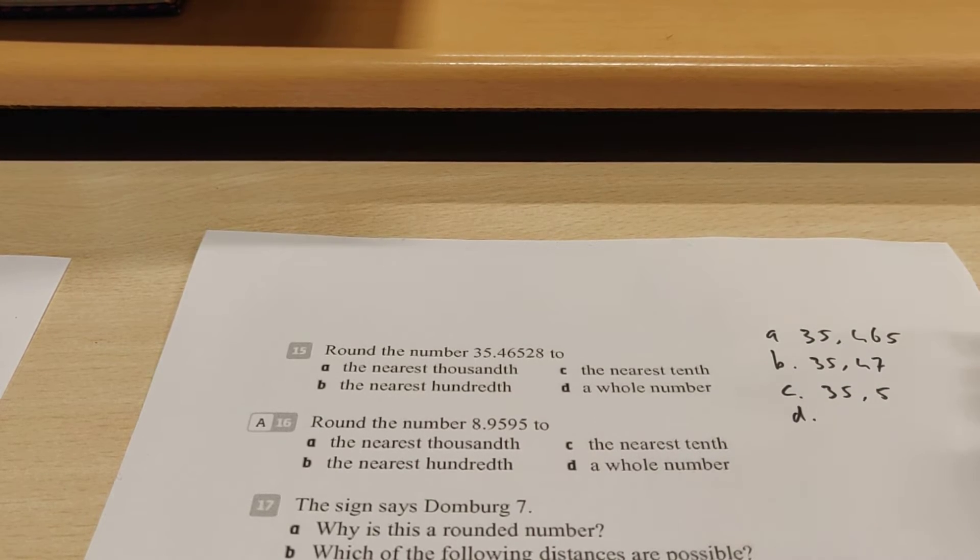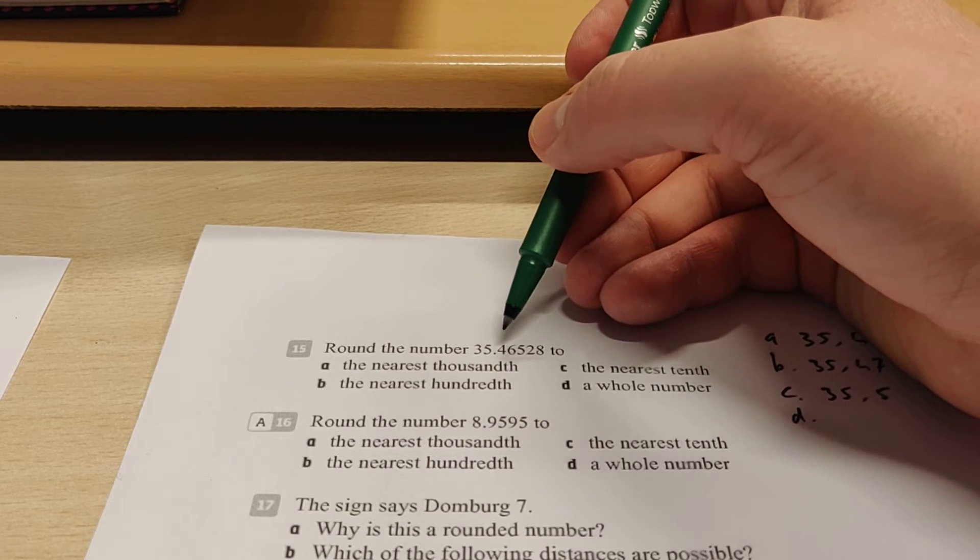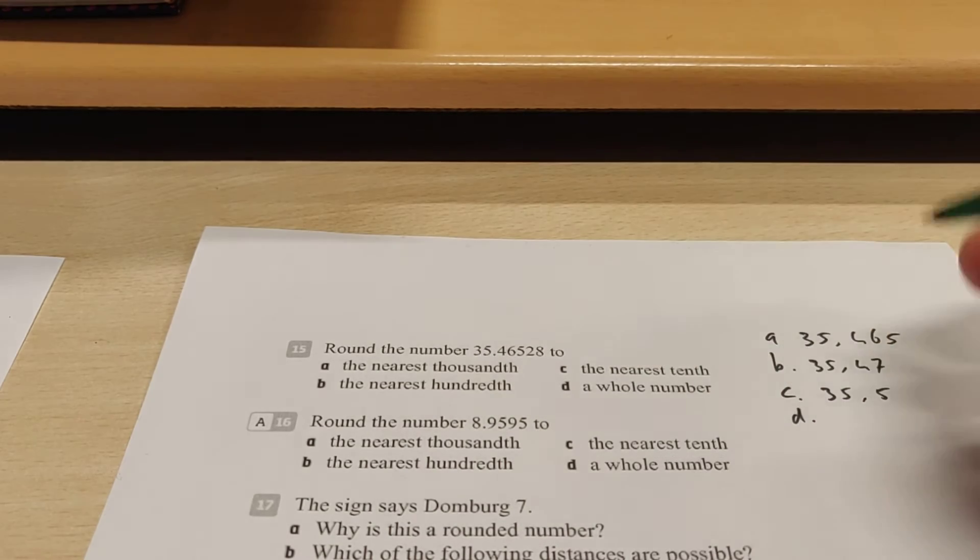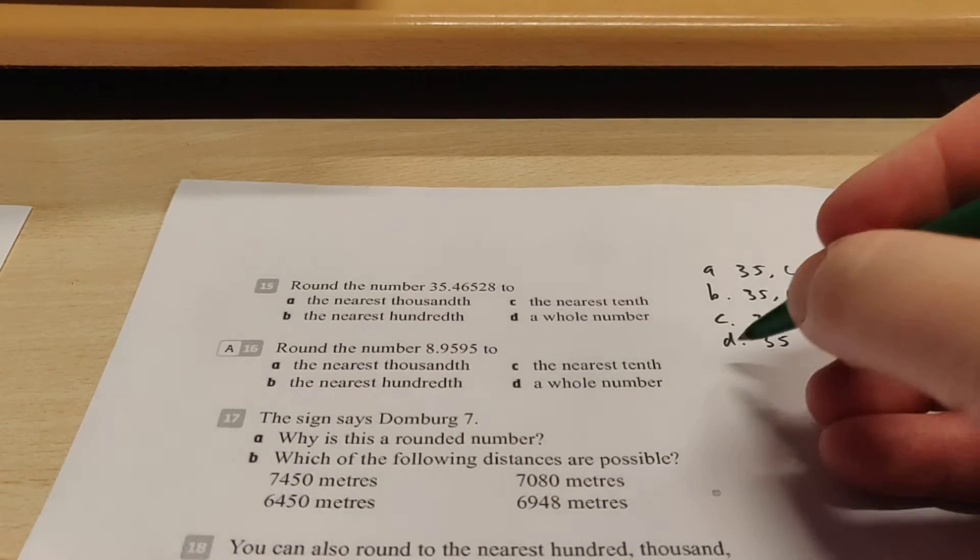And if you want to round off to a whole number, then here's 35. We take a look at the first decimal place, that's a 4. So that means it goes down, so it stays 35. So this is how you round that off.